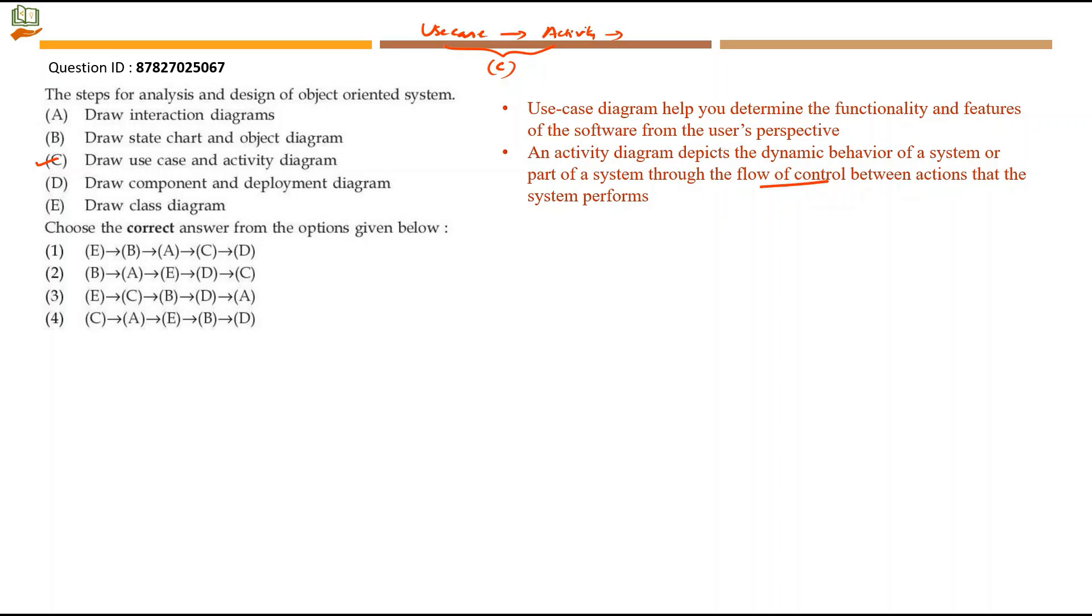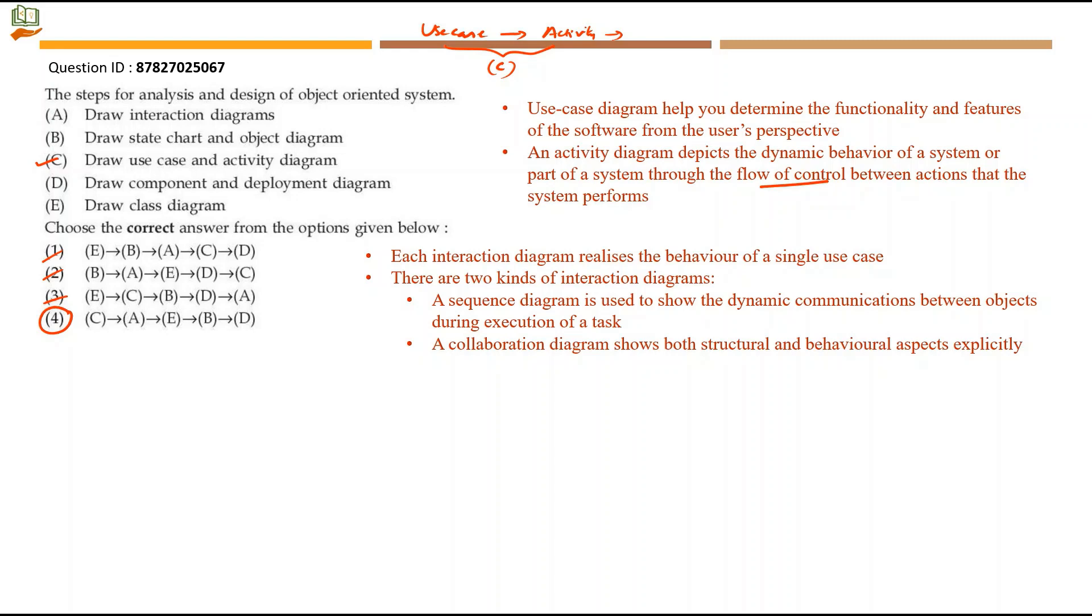The rest of the options can be ruled out. Each interaction diagram realizes the behavior of a single use case. So after you have a use case, you go for interaction diagrams. There are two kinds of interaction diagrams. One is the sequence diagram that is used to show the dynamic communication between objects during execution of a task. The other kind of interaction diagram is collaboration diagram which shows both the structural as well as behavioral aspects explicitly.